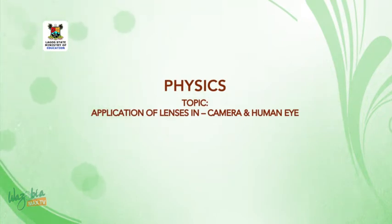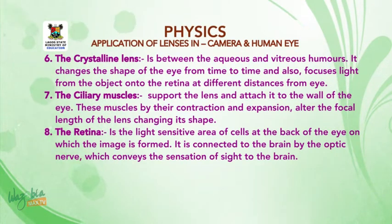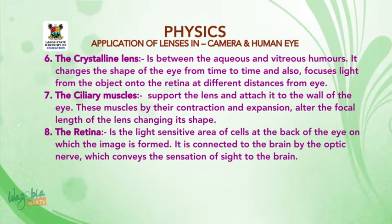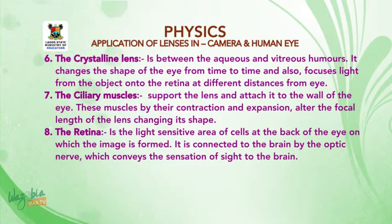Welcome back. We are still on essential parts of the eye and their functions. Number six: the crystalline or converging lens. This is between the Aqueous and Vitreous Humors. It changes its shape from time to time and also focuses light from the object onto the retina at different distances from the eye.